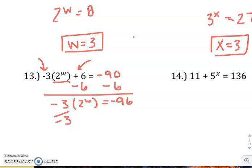And then we'll divide both sides by negative 3 to get him out of there. So we get 2 to the W equals, negative divided by negative, positive 32.